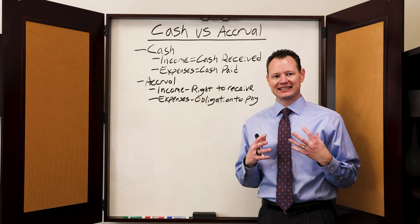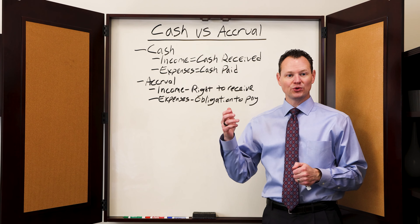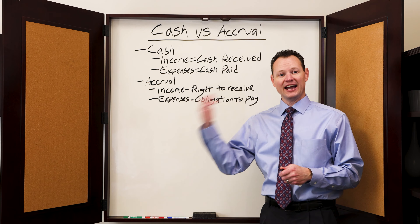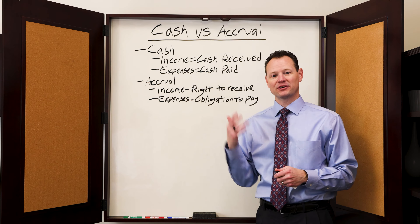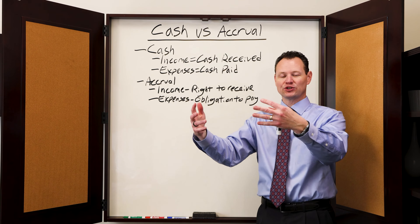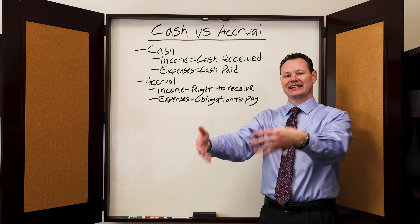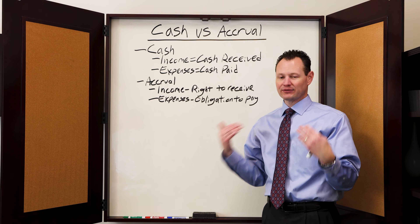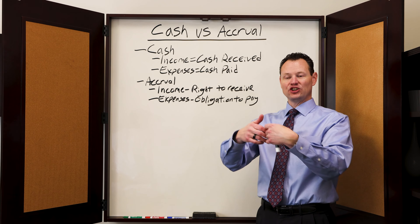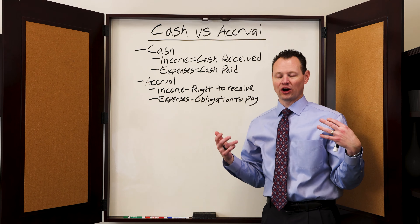Which method is best for a business to use? If you have more receivables than you have payables, then the cash method is usually the better method. Because if you're using the cash method, you don't have to recognize those receivables as income until that cash actually comes in. However, if you are using the accrual method, you're going to recognize those receivables as income when they are accrued.